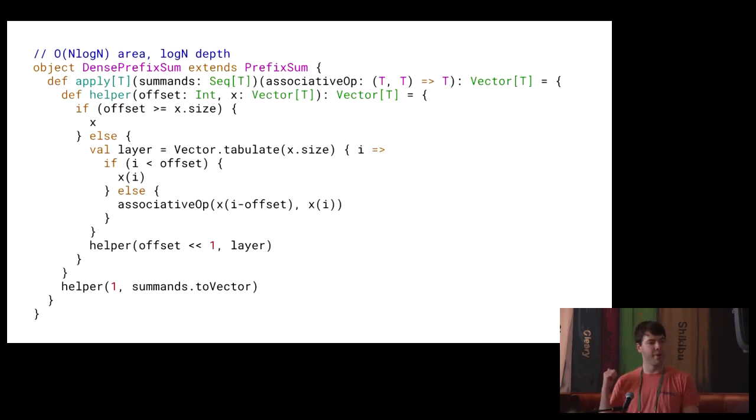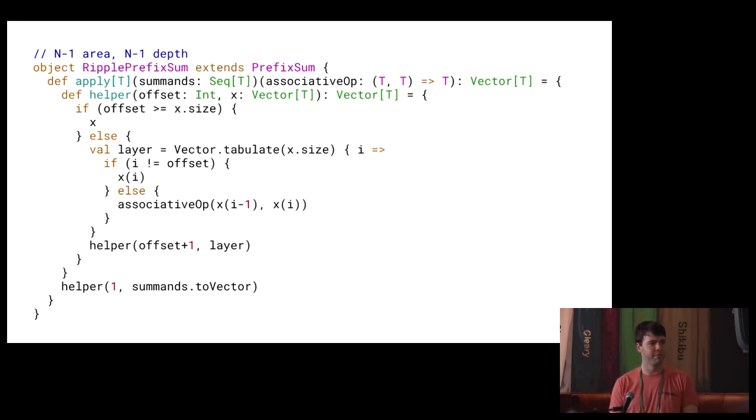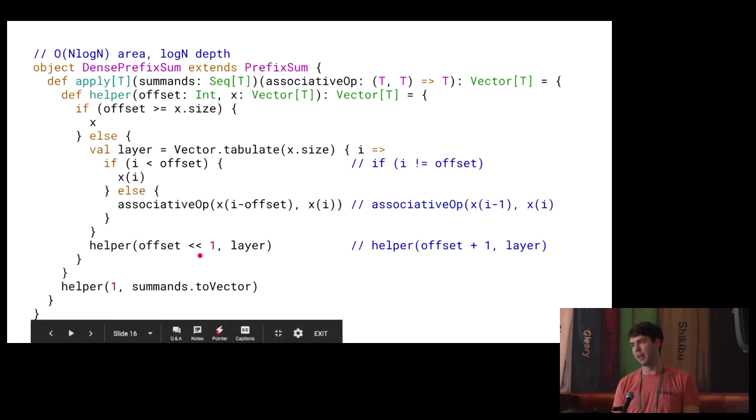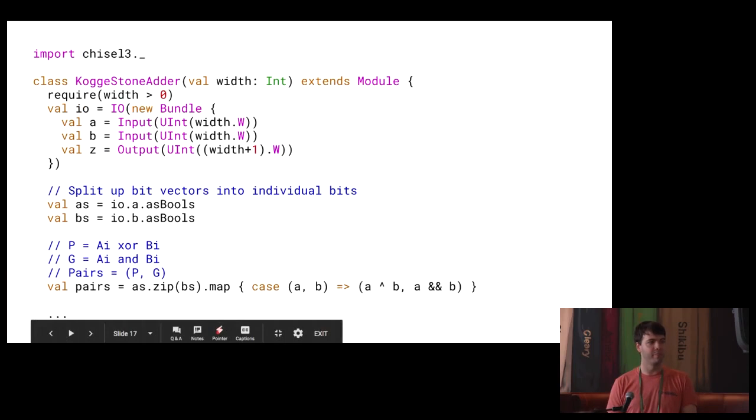So first, we have a dense prefix sum implementation, and that might look a little familiar. Huh. That's very similar. And so here I've marked what the actual differences are from the ripple prefix sum, but the idea here is instead of only plopping down your operator at the offset, you plop it down for any index less than the offset, and instead of incrementing the offset one by one, you are left shifting it or multiplying it by two, and that's where you get your log to depth. And so this is an implementation of a dense prefix sum, and so now let's make an adder.